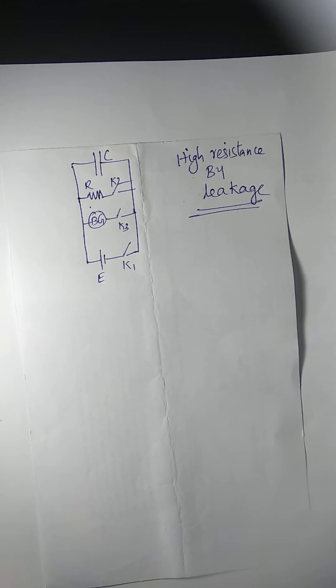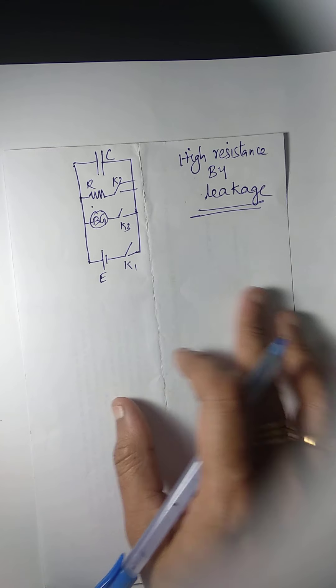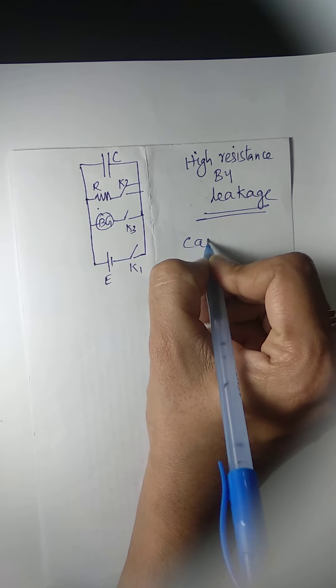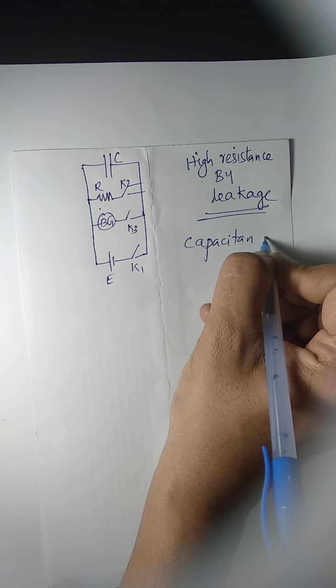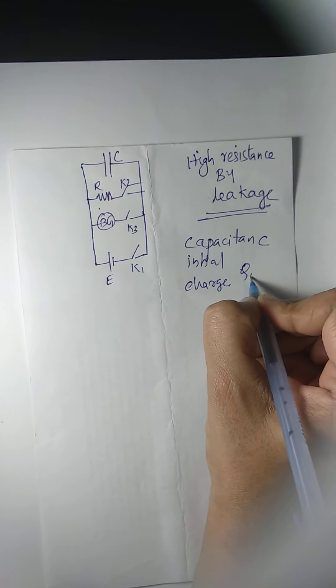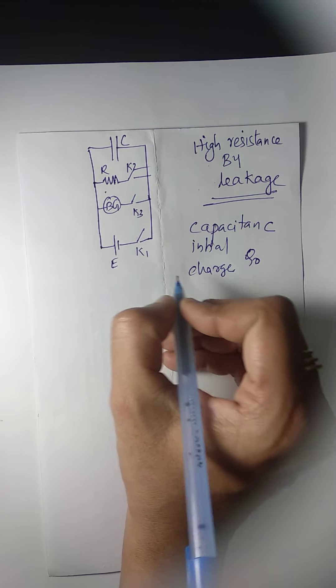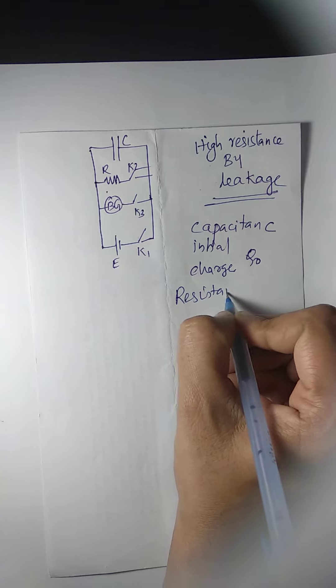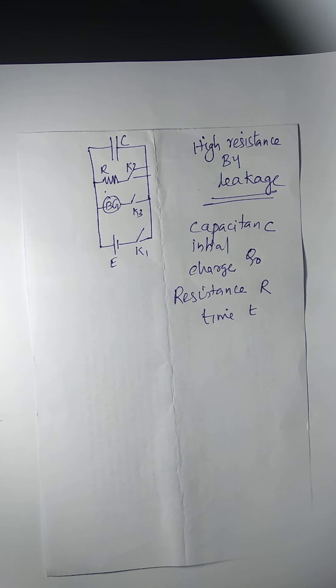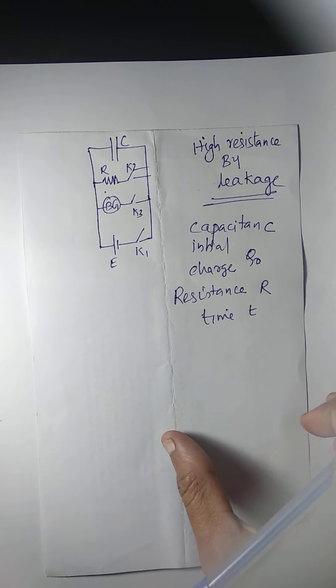In the last two videos, we studied the growth and decay of charge of a capacitor through a resistor. The next topic is measurement of high resistance by leakage. We are having a capacitance C, and a capacitor of capacitance C having an initial charge Q0, allowed to discharge through a resistor of resistance R at a time T. We are going to study the measurement of high resistance by leakage.